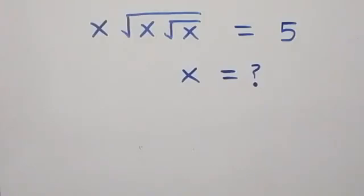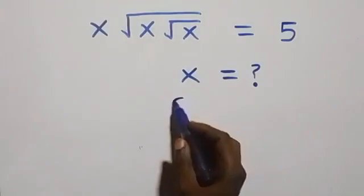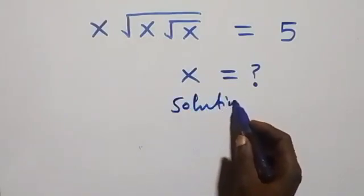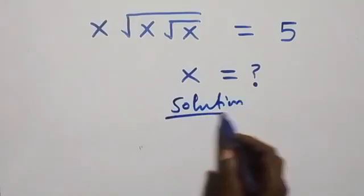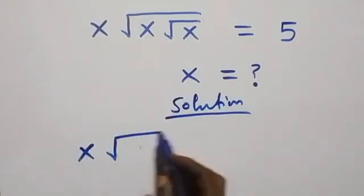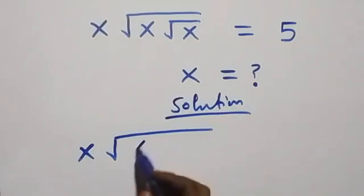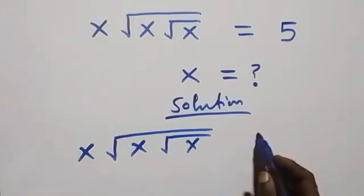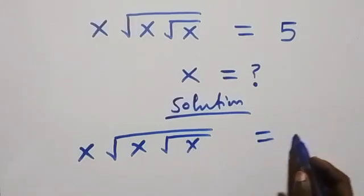Hello, you are welcome. Let's solve this nice algebra problem. From what we have, which is x times square root of x, and square root of x, equals 5.